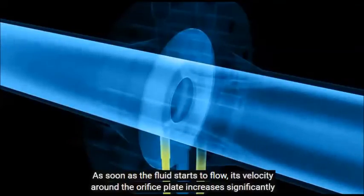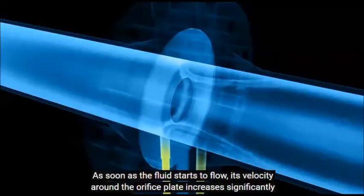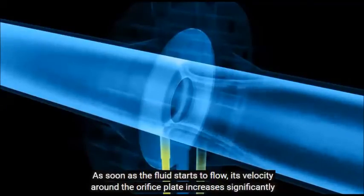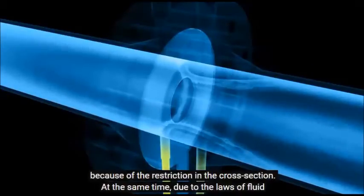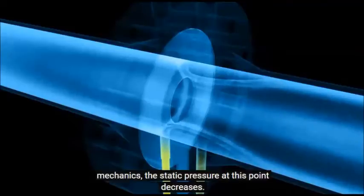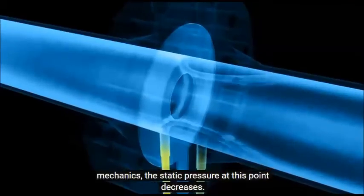As soon as the fluid starts to flow, its velocity around the orifice plate increases significantly because of the restriction in the cross section. At the same time, due to the laws of fluid mechanics, the static pressure at this point decreases.